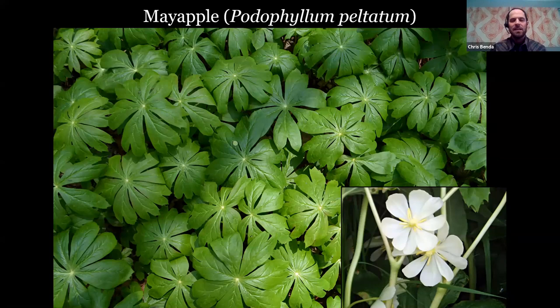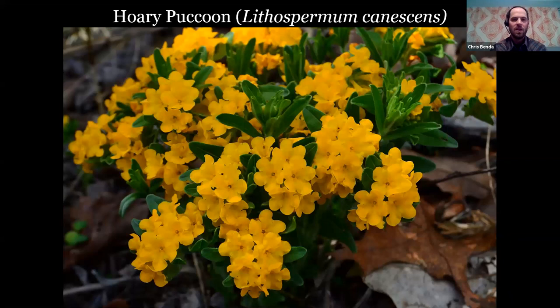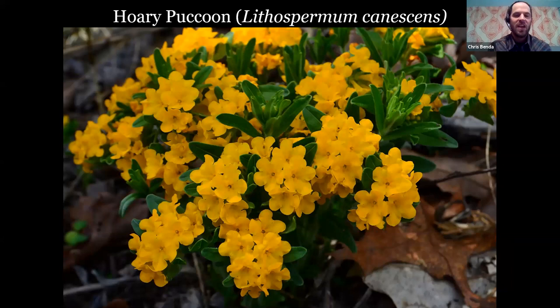Mayapple is in the Berberidaceae along with twinleaf, blue cohosh, and barberry. Lithospermum canescens is not exactly a spring ephemeral wildflower, but down in southern Illinois where I live it blooms very early on limestone glades when hardly anything else is blooming. In the northern part of the state you can find these blooming in June in sand prairies and savannas. I took this picture at Simpson Barrens where there was a nice big clump of this wildflower — one of my favorites. It's related to bluebells; it's in the Boraginaceae, the borage family.